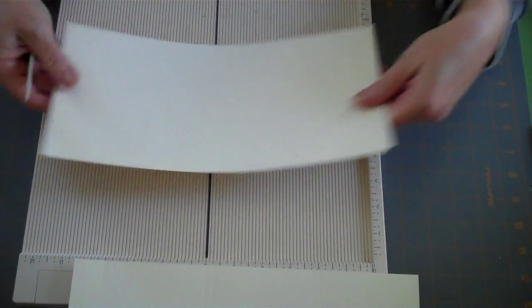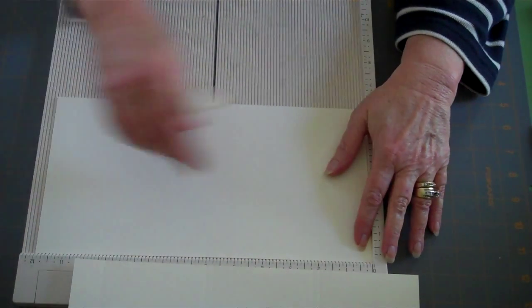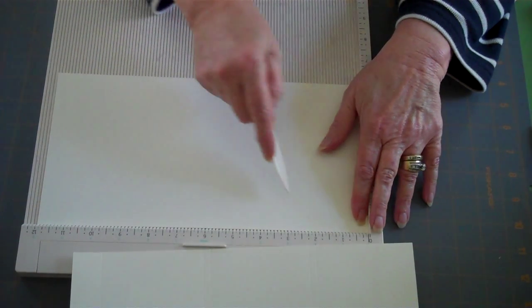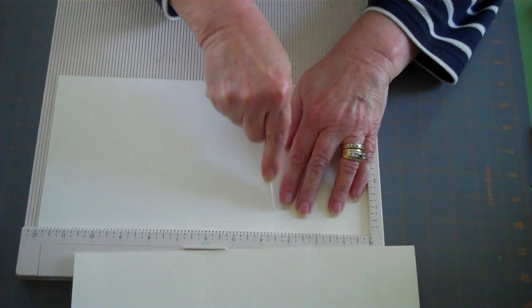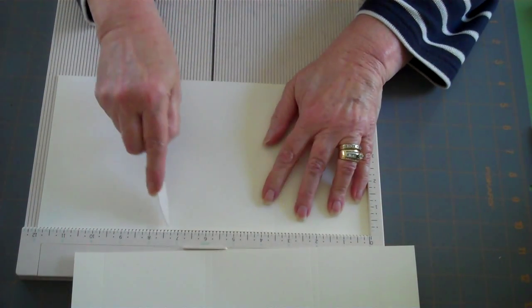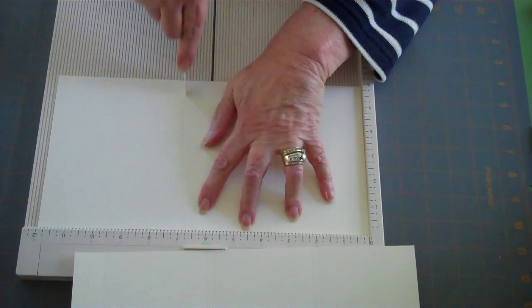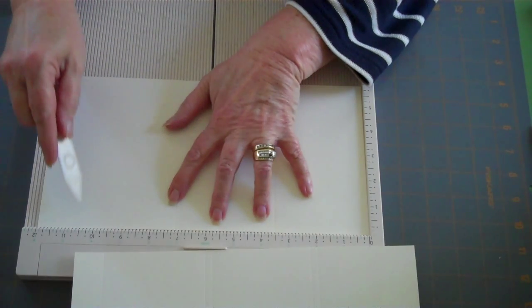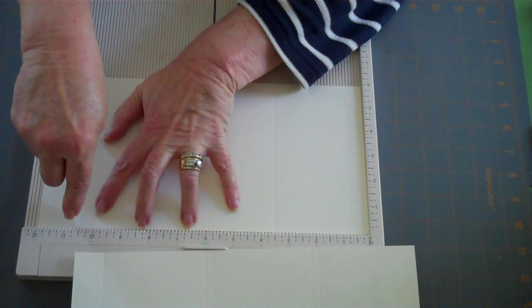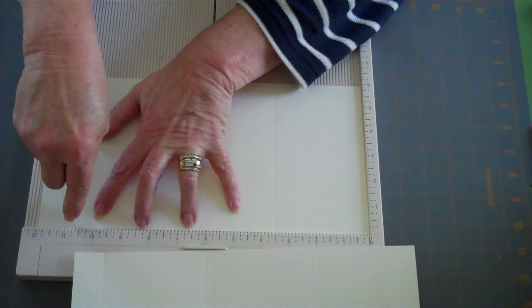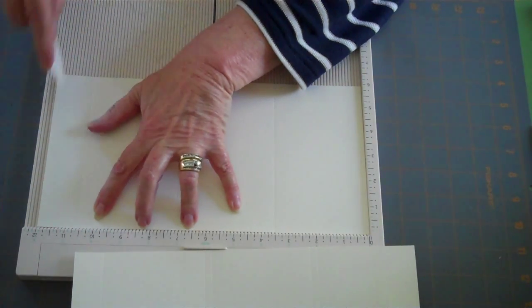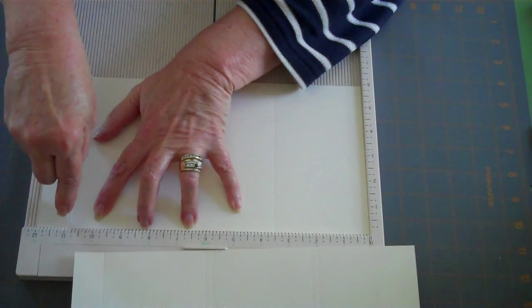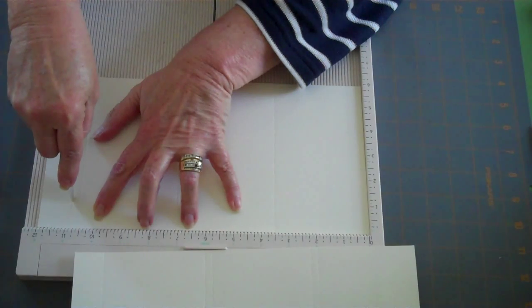Then we're going to put the other 6 by 12, and again your 12 inch side is going to be at the top of your scoreboard. And we're going to score at 3.5, 7, 7.8, 10.625, 10.5 eighths, and 10.875, 10.7 eighths. That's the tick right before your 11.